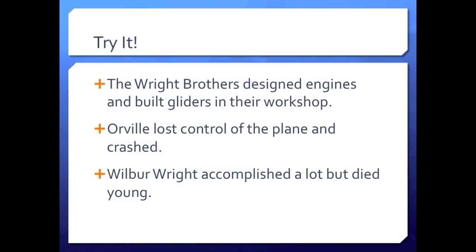Now you try it. Can you find the compound predicates in these sentences? Let's look at sentence number one. 'The Wright brothers designed engines and built gliders in their workshop.' What is the compound predicate in this sentence? The compound predicate is 'designed engines and built gliders in their workshop.' This sentence has two simple predicates, or verbs, which are 'designed' and 'built.' These two predicates share the same subject, so it's a compound predicate.